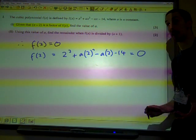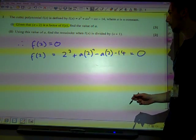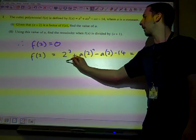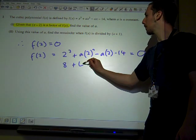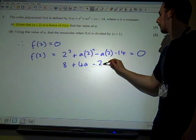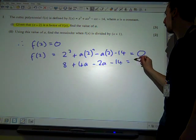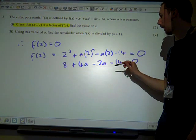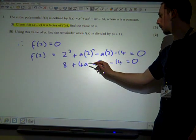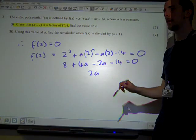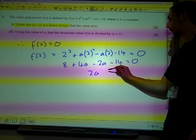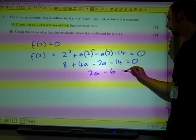This looks like we've now just got an equation in terms of a, and it's a linear equation. So we've got 8 plus 4a minus 2a minus 14. 2a and 8, take away the 14, is going to be minus 6.